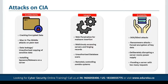Next on the list, we have integrity. Integrity involves maintaining the consistency, accuracy, and trustworthiness of data over its entire life cycle. Data must not be changed in transit, and steps must be taken to ensure data cannot be altered by unauthorized people. These measures include file permissions and user access controls. Version control may be used to prevent erroneous changes or accidental deletion. Some means must also be in place to detect changes from non-human events such as electromagnetic pulses or server crashes, and some data may include cryptographic checksums for verification of integrity.